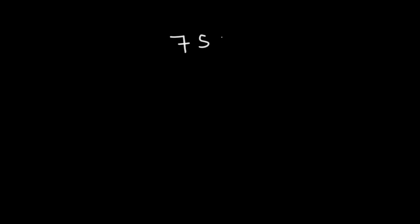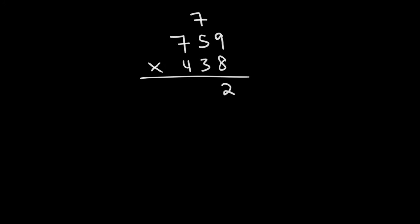So this is going to be the final example. It's going to be the hardest one we've worked on in this video. Multiply 759 by 438. So first we have 8 times 9, which is 72. Write the 2 and then carry over the 7. Next is 8 times 5. 8 times 5 is 40, add 7, that's 47. So we're going to write the 7 and carry over the 4. And then 8 times 7 is 56 plus 4, that's 60.